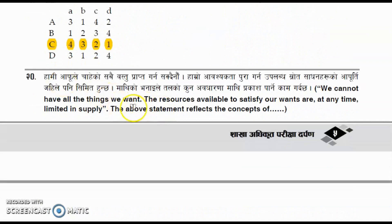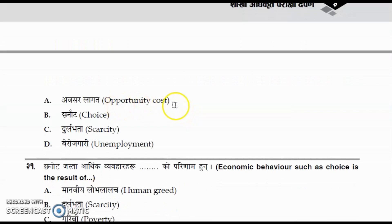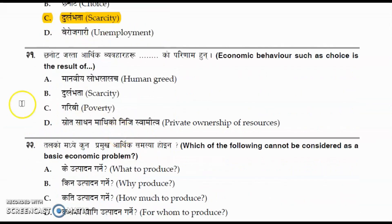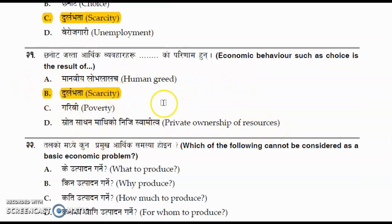Question number twenty: 'We cannot have all things we want; the resources available to satisfy our wants are at any time limited in supply.' This statement reflects the concept of scarcity — the correct answer is scarcity. Question number twenty-one: economic behavior such as choice is the result of scarcity. The correct answer is option B, scarcity.